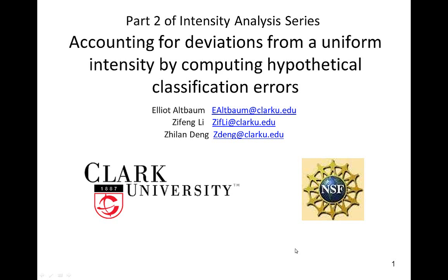This video explains how to interpret deviations from a uniform intensity by hypothesizing whether classification errors in the maps could explain the deviations. This video is the second of a three-part series supported by Clark University and the National Science Foundation.